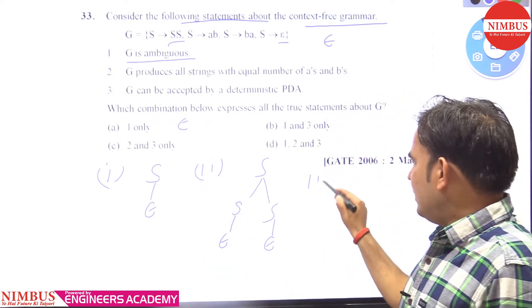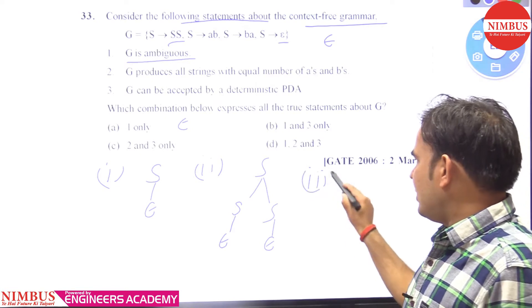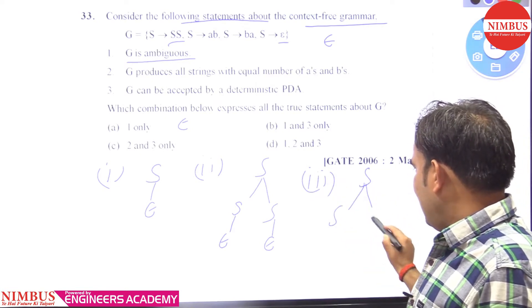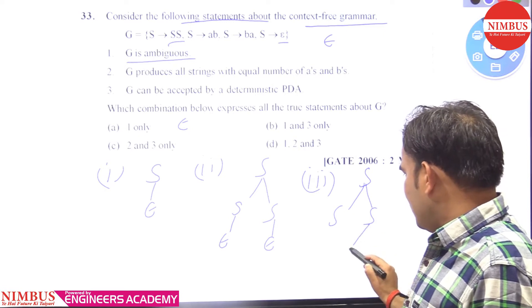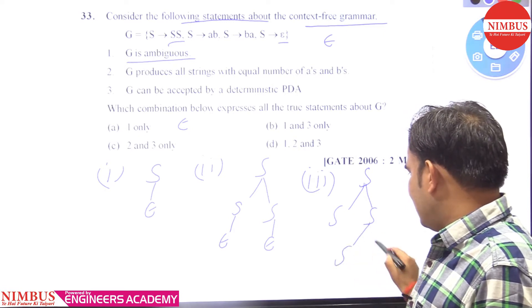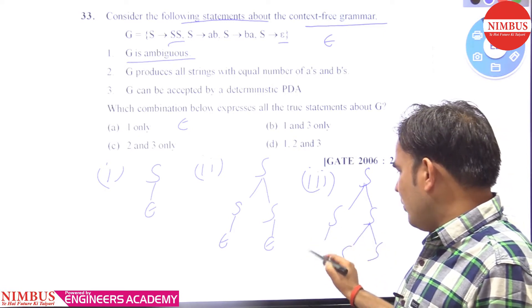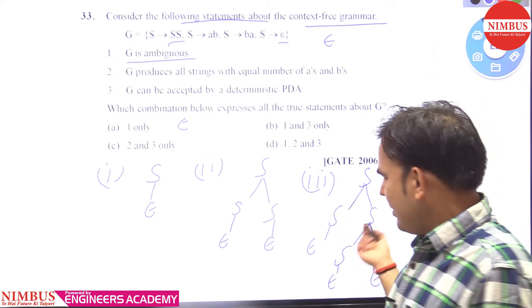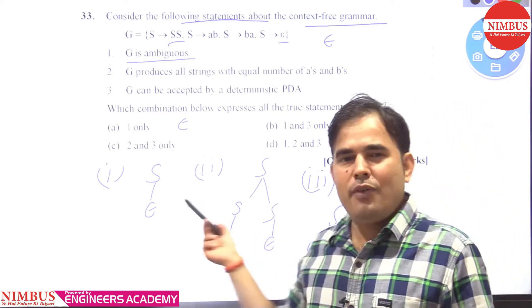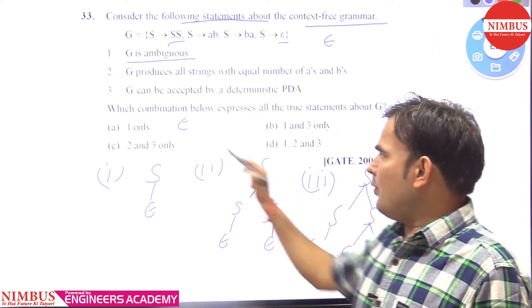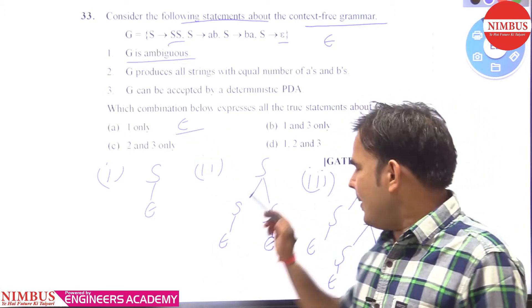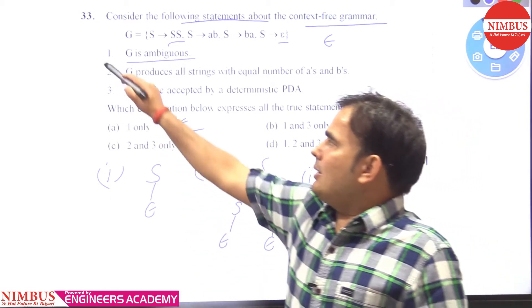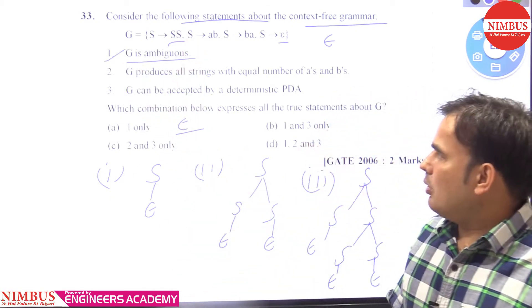A third parse tree also exists: S goes to SS, and this S you can replace with SS again. Here you get epsilon, here epsilon, here epsilon, and here epsilon too. So infinite parse trees exist for epsilon, and we can say the given grammar is ambiguous.